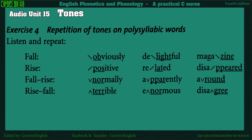Exercise 4: Repetition of tones on polysyllabic words. Listen and repeat. Obviously. Delightful. Magazine. Positive. Related. Disappeared. Normally. Apparently. Around. Terrible. Enormous. Disagree.